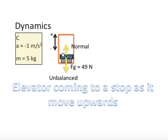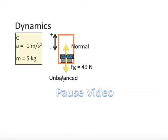Now, during that video, the elevator came to a stop as it was moving upwards. Let's examine the forces this time. Well, assuming the acceleration while coming to a stop is negative 1, I want you to solve for the normal force. Please pause video now.